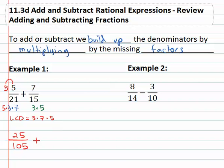Plus, on the second fraction in the denominator, we have three times five. What's missing is the seven, so we'll multiply by seven in both the numerator and denominator. Seven times seven is forty nine, over three times five times seven is one oh five.